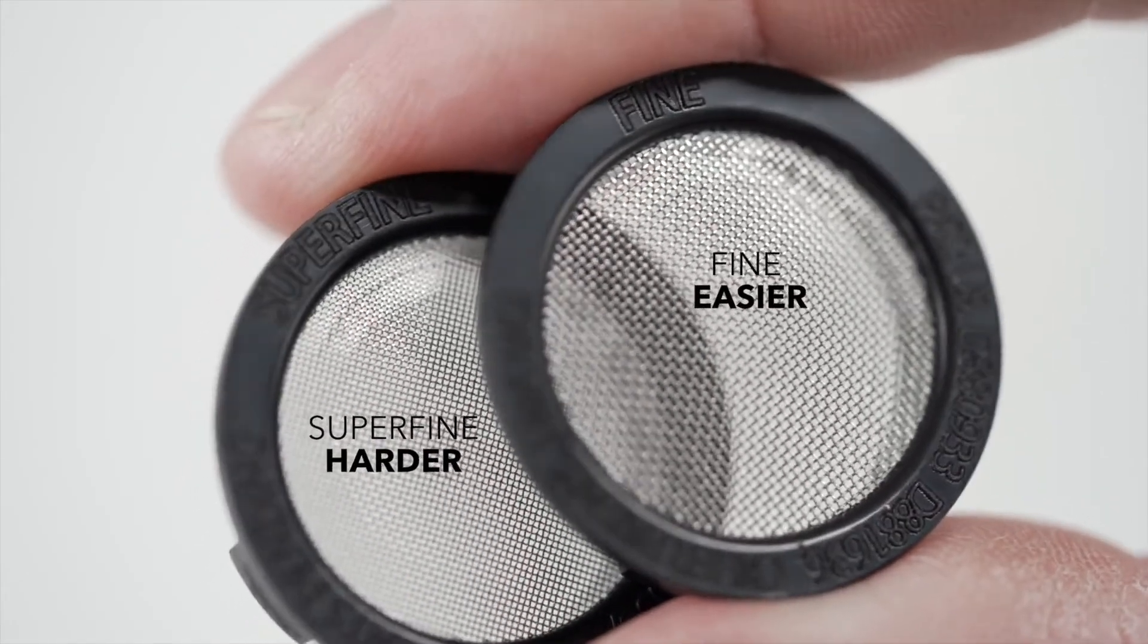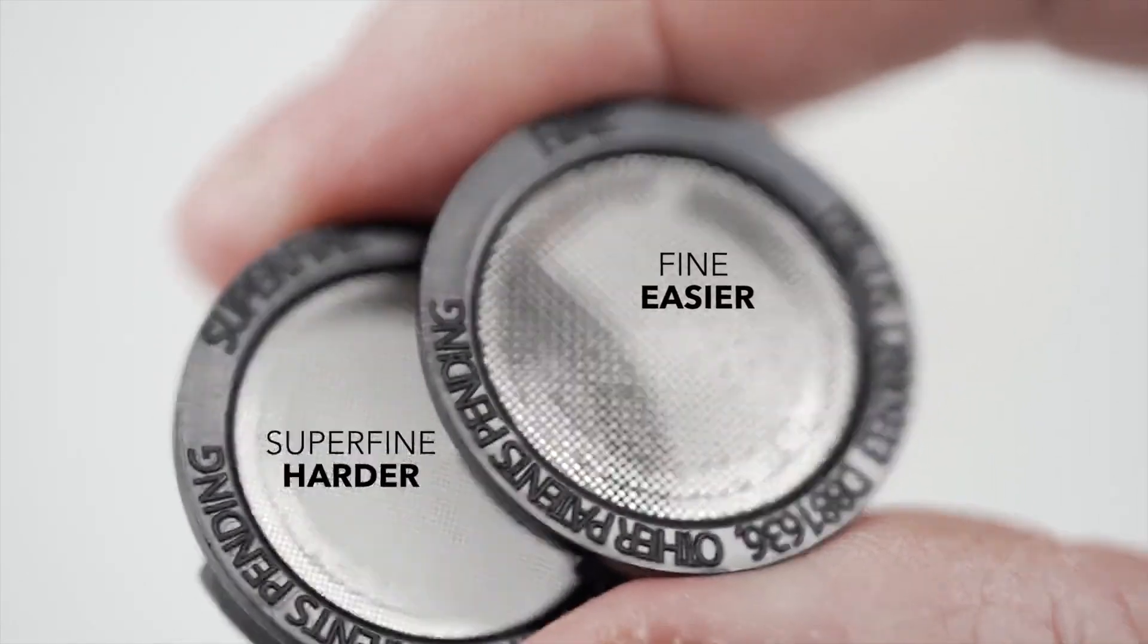If you find yourself struggling, start with the fine nanoscreen, as it is easier to get consistent results than with the superfine. Also, make sure you use fully charged batteries to keep the motor spinning as fast as possible.